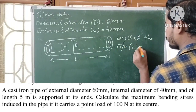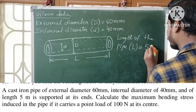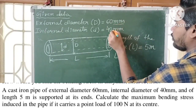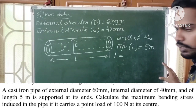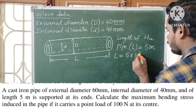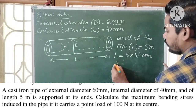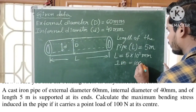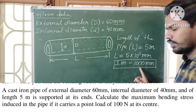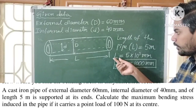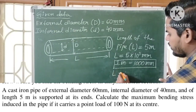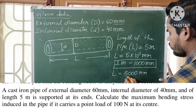Length of the pipe, capital L, is equal to 5 meters. Let us convert it to mm because the diameter is already in millimeters. Since 1 meter is equal to 1000 millimeters, L is equal to 5 into 1000 = 5000 mm.